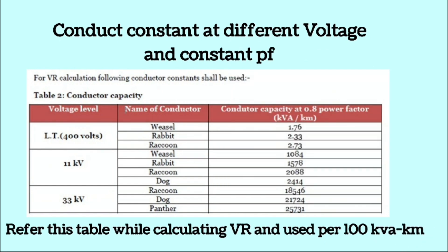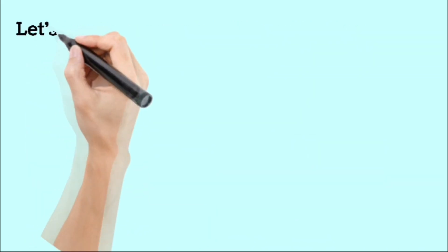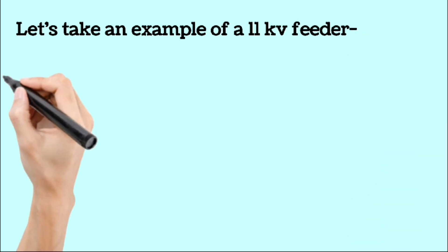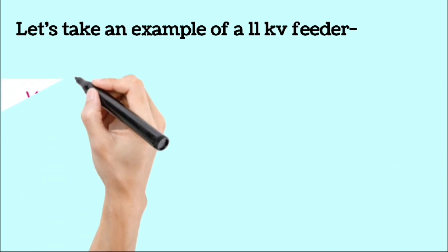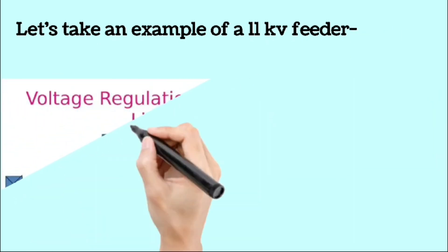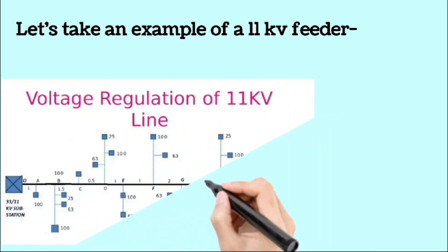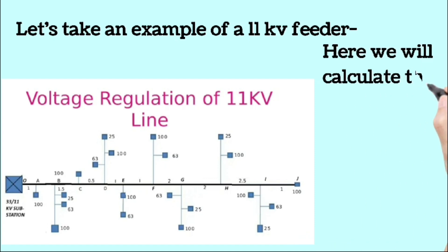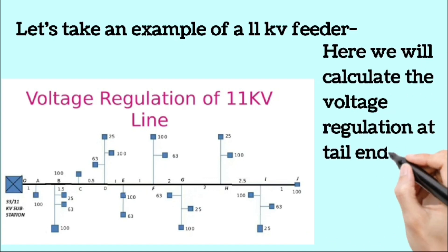Here we have a single line diagram of 11 KV feeder connected transformer at different tapings having a load at different point of length. Pause this video and note all the load at different points. Now we calculate the voltage regulation at tail end on line, that is at point J. Pause the video and do the first step as I told in my previous video, link I given in i button. The first step is to simplify the given SLD.